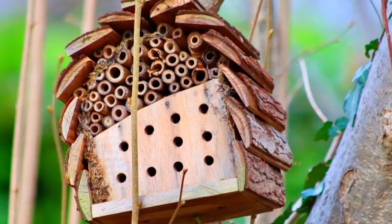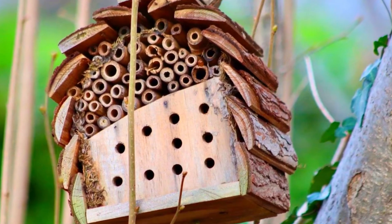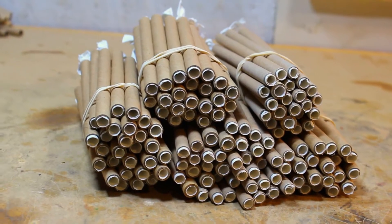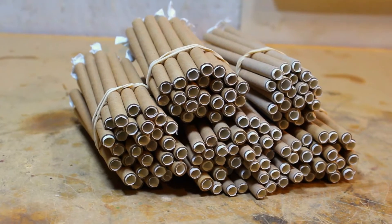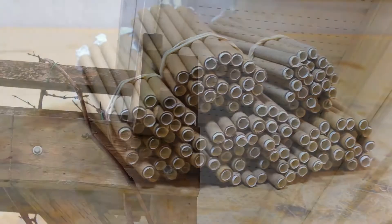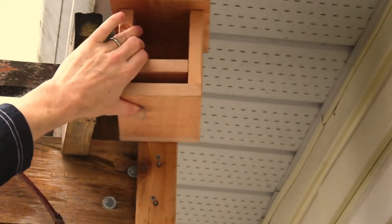The important thing is that the tubes or cavities are made to the correct length and diameter. The ideal length is anywhere between four to eight inches with a diameter of around five sixteenths. One end of the tube or cavity should be sealed off to prevent parasites from entering.